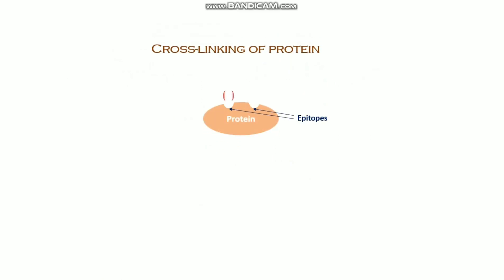We know that proteins have epitopes where the antibody binds, but because of this cross-linking by paraformaldehyde, the epitope of the protein becomes masked. This is why the antibody cannot recognize or bind properly with the epitope, restricting antigen-antibody binding and resulting in poor immunohistochemistry results.